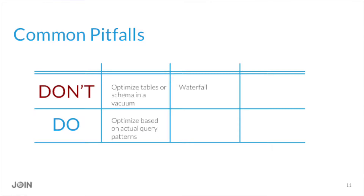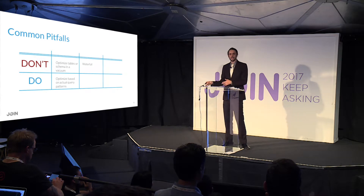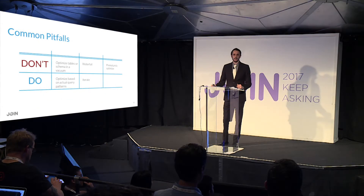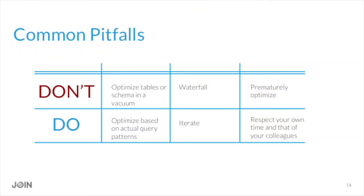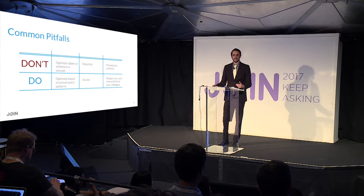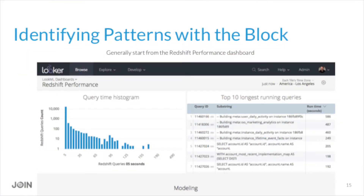Don't waterfall — don't make a big project out of setting up the schema for everything before you can start getting value. Do iterate: get that minimum logical schema up on your instance, then see where the actual bottlenecks are and fix those. Don't prematurely optimize by denormalizing everything upfront. Respect your own time — optimizing joins away by denormalizing might save maybe 5% performance on a well-optimized join, so consider whether that's really where you want to be spending your time.